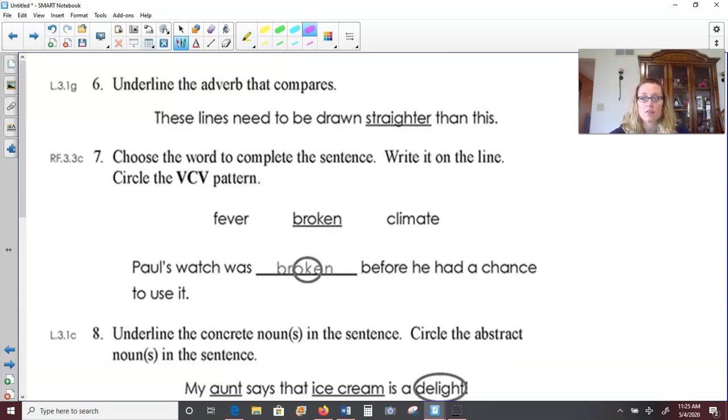Last page here for the week. Number six, underline the adverb that compares. These lines need to be drawn straighter than this. How do the lines need to be drawn? Straighter. Remember, adverbs describe the action, the verb. And our verb is drawn and straighter tells us how they need to be drawn.